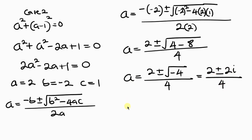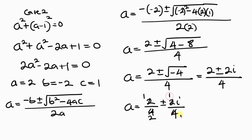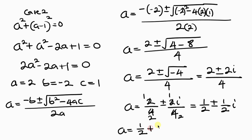Separating the fraction, we have 2 over 4 plus or minus 2i over 4. Simplifying, 2 over 4 reduces to 1 over 2, and 2i over 4 reduces to 1 over 2 i. So a equals 1 over 2 plus or minus 1 over 2 i. The two values are a equals 1 over 2 plus 1 over 2 i, or a equals 1 over 2 minus 1 over 2 i.